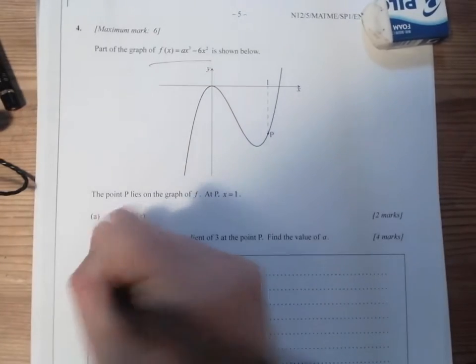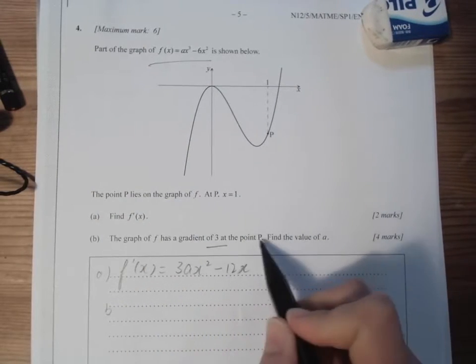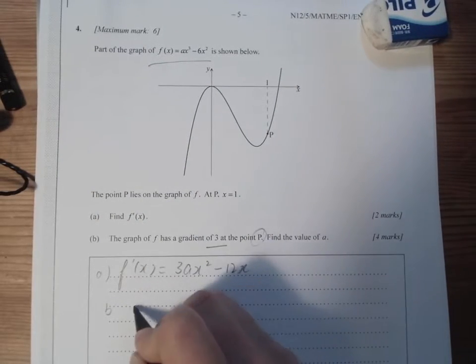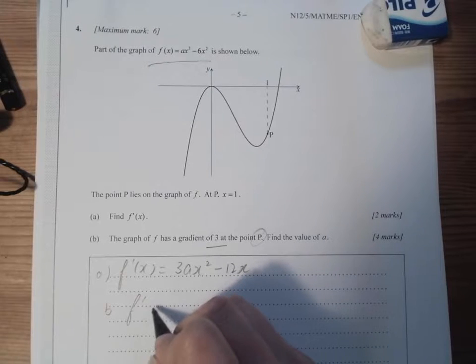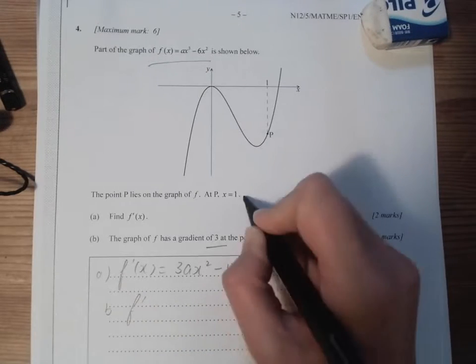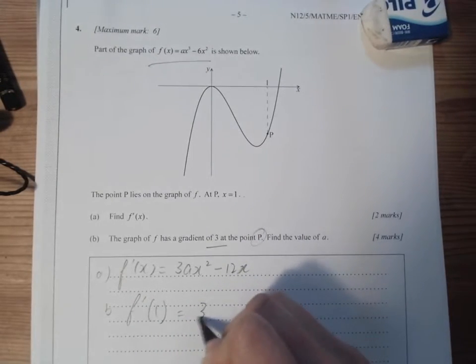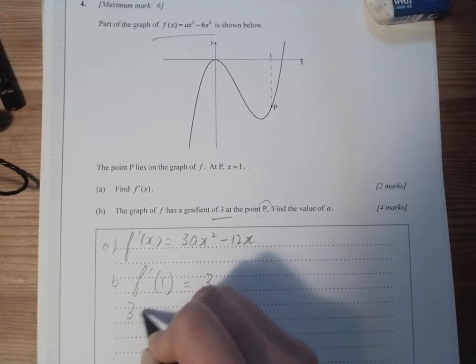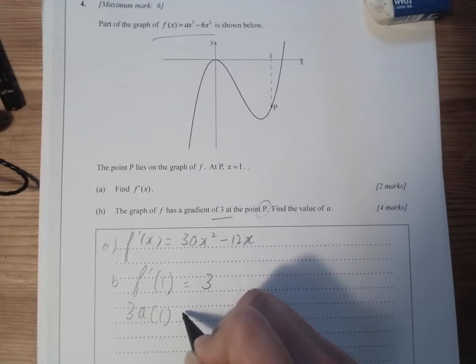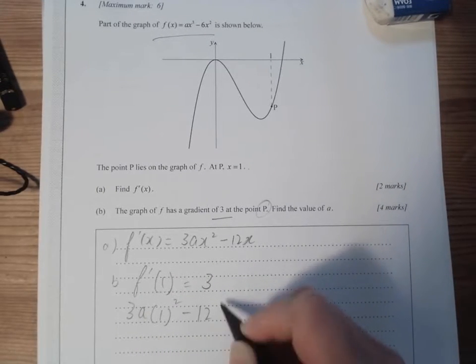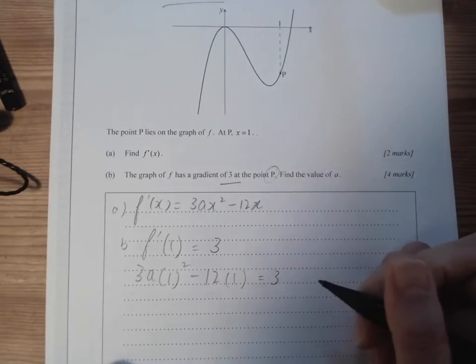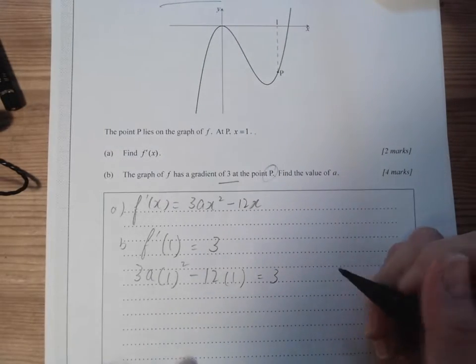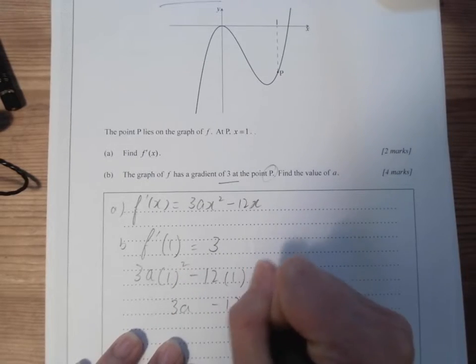For B, we need to find the gradient at point P, we need to find the value of a. So f'(1) equals 3, so we have 3a(1)² minus 12(1) equals 3. All you need is a simple substitution: 3a minus 12 equals 3.